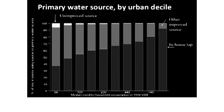This next slide shows primary water source by urban population income decile, from the lowest 10% up through the highest. In urban areas, piped water connections increase steadily as income goes up. If households don't have pipe connections, they do have other improved sources in urban areas. There are very few households in this data set that are relying on unimproved water sources and live in urban areas.